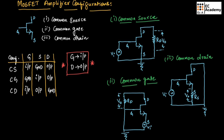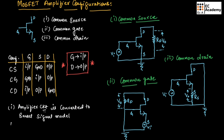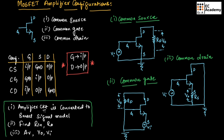Whenever we connect a MOSFET as an amplifier, there are three steps to remember. First, the amplifier circuit is converted into the small signal model. Second, we need to find the values of input resistance and output resistance. Third, we find the voltage gain AV, from which we can determine the output voltage and input voltage. Follow these three steps for all amplifier configuration circuits.